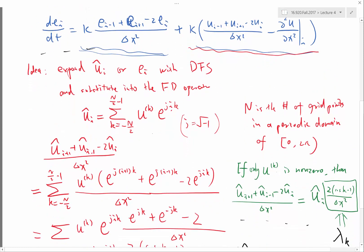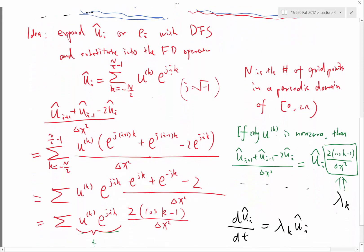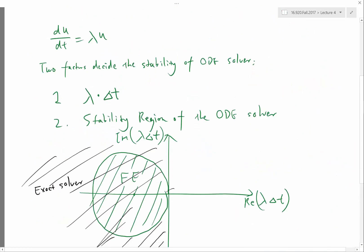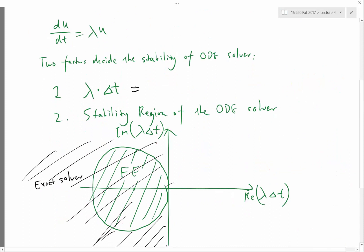And the stability region is going to be determined by this particular lambda k times delta t. And this particular lambda k is equal to 2 times (cos k - 1) divided by delta x squared times delta t, where k goes from minus n/2 to n/2 minus 1. So that's the range of the discrete Fourier series.